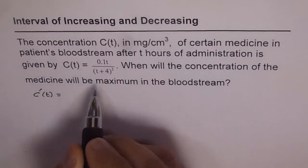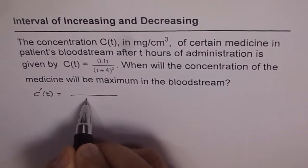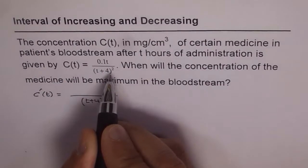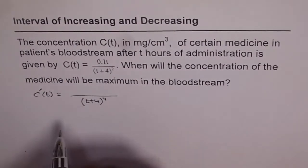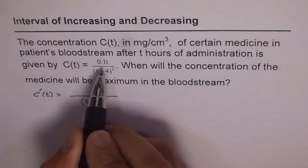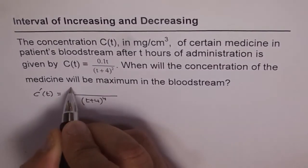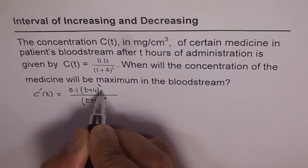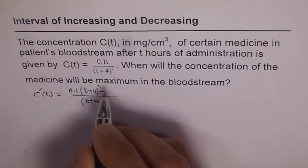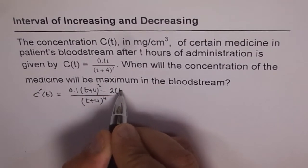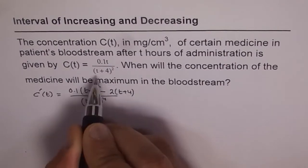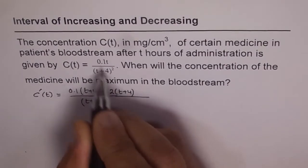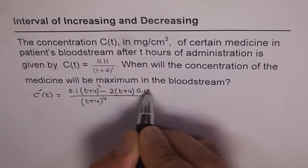We can apply the quotient rule here. The denominator is (T + 4) squared, so its square gives power 4. First we take the derivative of 0.1T, which is 0.1, times (T + 4) squared, minus the derivative of (T + 4) squared — which is 2(T + 4) times 1 — multiplied by 0.1T.